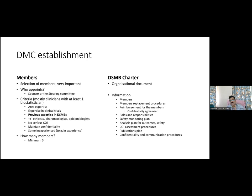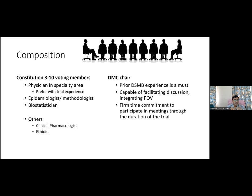The DSMB charter is the organizational document governing how the DSMB runs. It should include: information on member replacement procedures; reimbursement arrangements; confidentiality agreements, since members have access to sensitive unblinded trial data; roles and responsibilities of each member; the overall safety monitoring plan; the schedule for interim data reviews; stopping rules; assessment of conflict of interest; and communication procedures between the sponsor, DSMB, and IRB. This charter is usually part of the main protocol document.